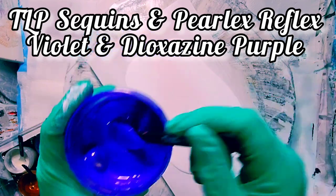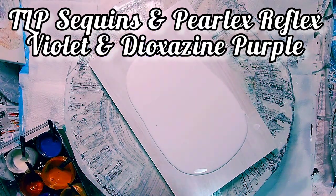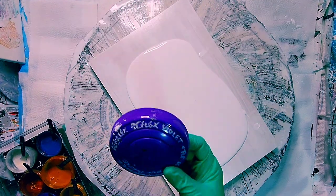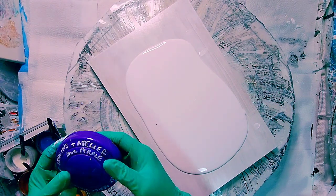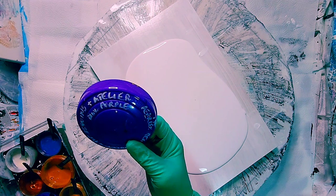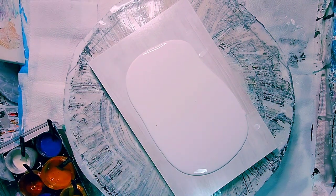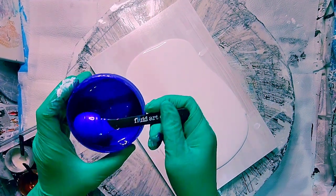Pebeo iridescent precious gold. Now this one I have to look at - I found this one, it's beautiful purple. It's Pearl X reflex violet with TLP sequins and a couple of blobs of Atelier dioxazine purple, and you get this beautiful purple.